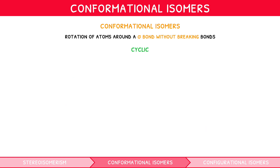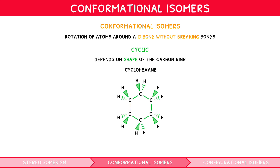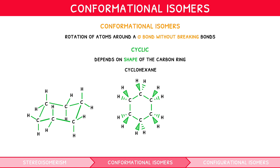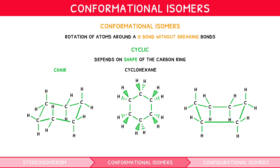For cyclic compounds, conformational isomers are not dependent on the groups surrounding the carbons, but instead the shape of the carbon ring itself. Consider cyclohexane. When visualised in 3D, the carbon atoms forming the ring can be bent in multiple directions. If we arrange the atoms like so, it looks like a chair, so we call it a chair isomer. However, arranging the atoms differently, it looks like a boat, so we call it a boat isomer. Like with eclipse and anti, we can represent these two isomers using simplified diagrams.